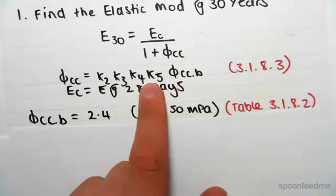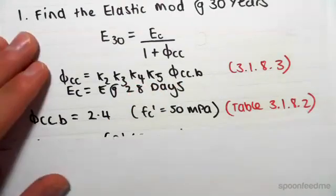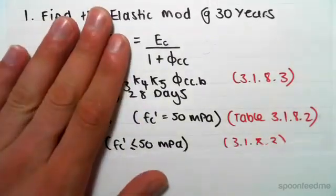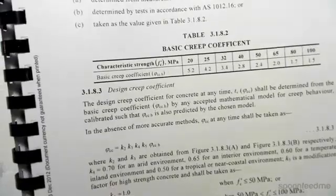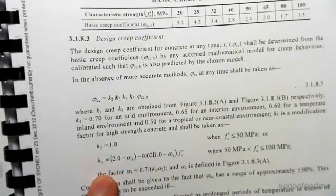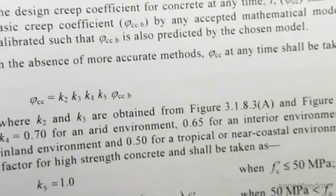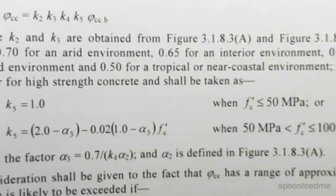We need to go and find all these k values now from section 3.1.8.3, the same section over here. It has a clause down here for k5, let me zoom in a bit.